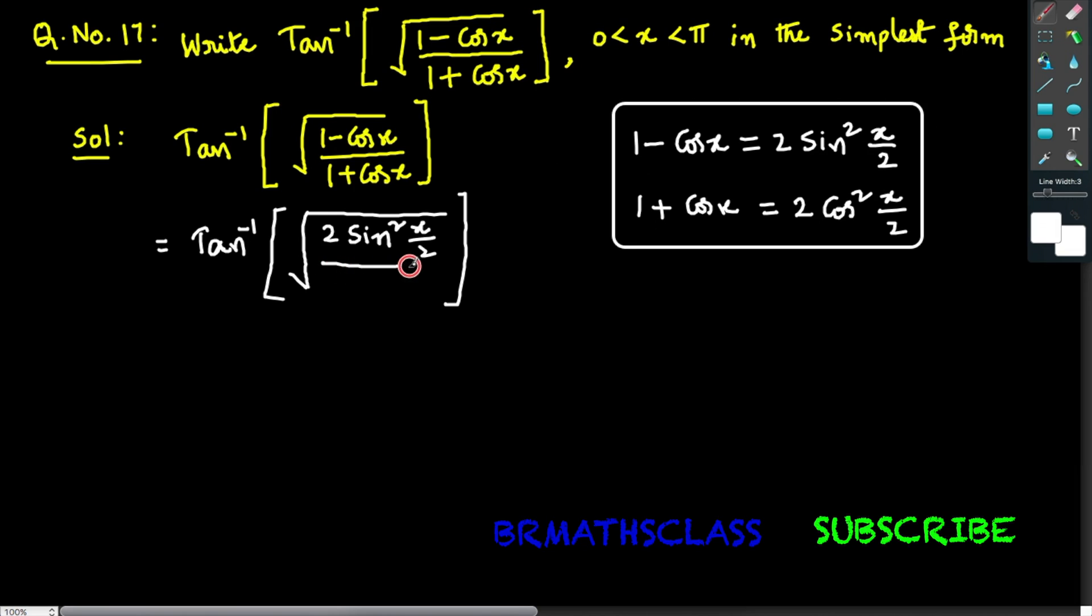And what is the formula for 1 plus cos x? The formula for 1 plus cos x is 2 cos squared (x/2). So in place of 1 plus cos x, I will write 2 cos squared (x/2).